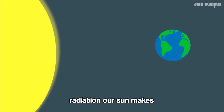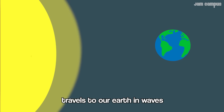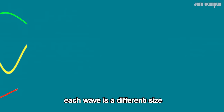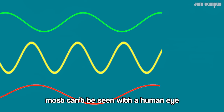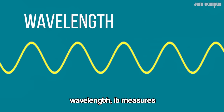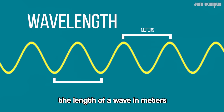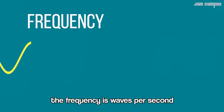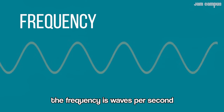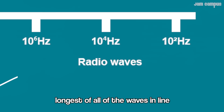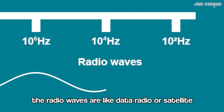Radiation travels through our earth in waves. Each wave is a different size, most can be seen with the human eye. Wavelength is the length of a wave in meters. Frequency is waves per second. Different wavelengths span the whole spectrum. Third longest of all the waves in line.